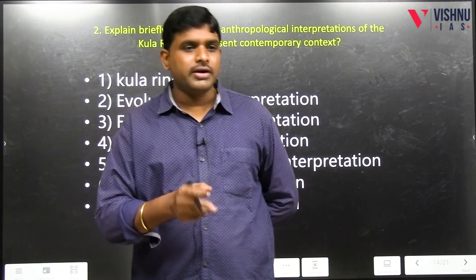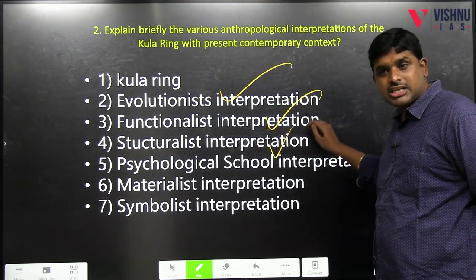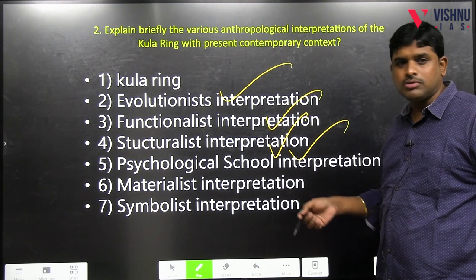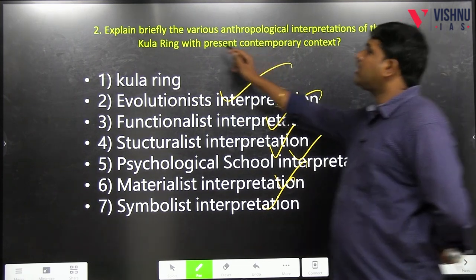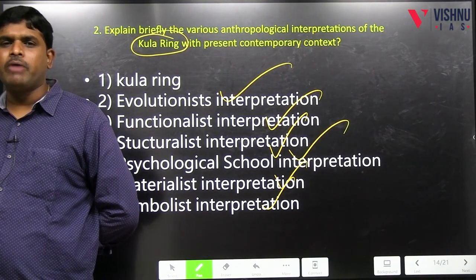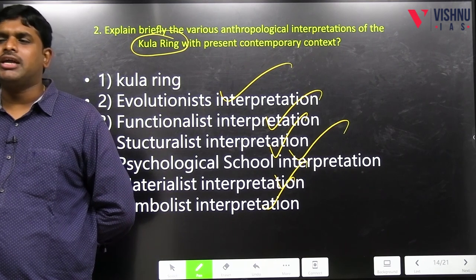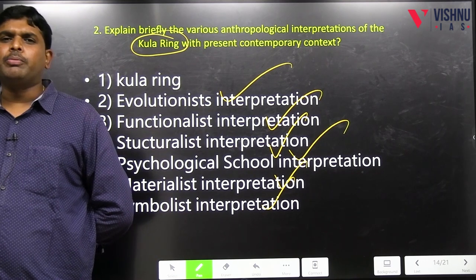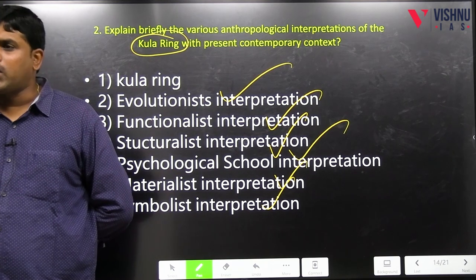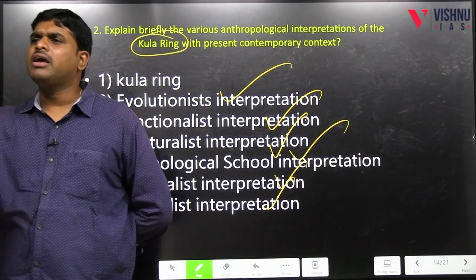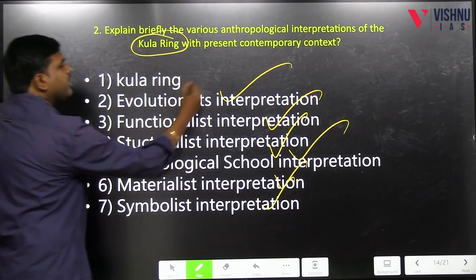What are the anthropological interpretations? Evolutionist interpretation, functionalist interpretation, structuralist interpretation, psychological school (culture personality school) interpretation, materialist interpretation (culture materialism), symbolic interpretation. Malinowski is a person who gave the substantivist approach under economic anthropology; he studied the case study in Trobriand Islands named Kula Ring. First write about Kula Ring — half a page — then give the interpretations.